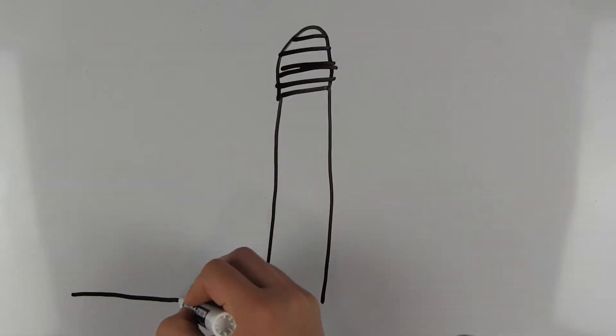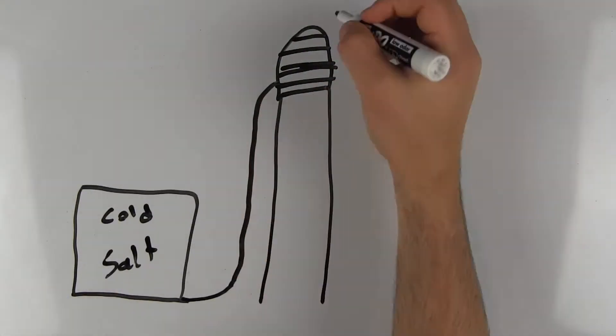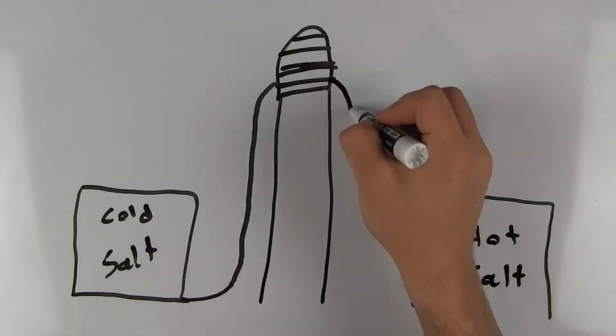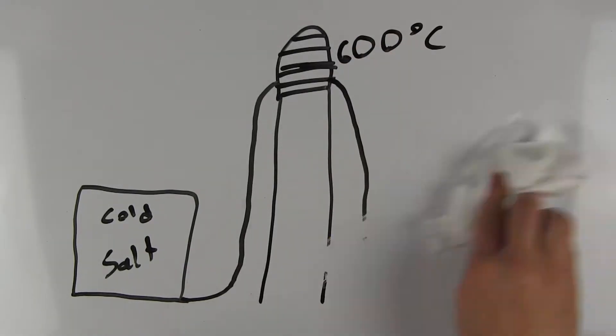Cold salt is then pumped from a tank to the collector, where it is heated up to about 600 degrees Celsius, and then it goes back down to another tank on the other side.